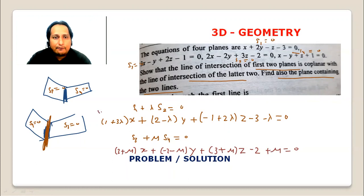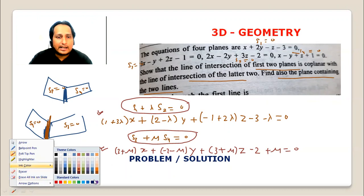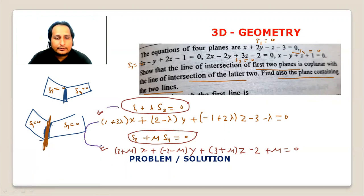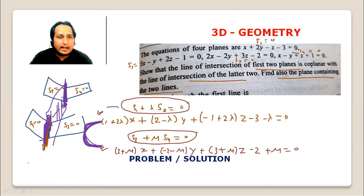These infinite family of planes pass through the line of intersection of s1 equals 0 and s2 equals 0. Similarly, the other family passes through the line of intersection of s3 equals 0 and s4 equals 0. If values of lambda and mu exist such that these two plane equations are identical, then these two lines are coplanar and the planes will represent the same equation.